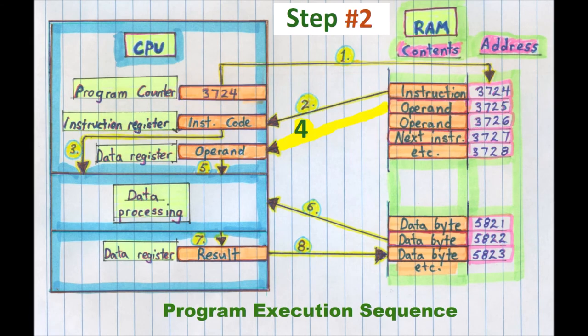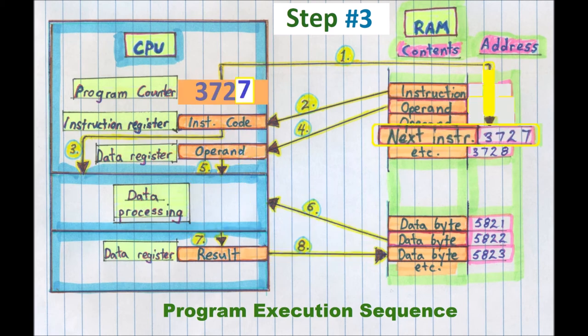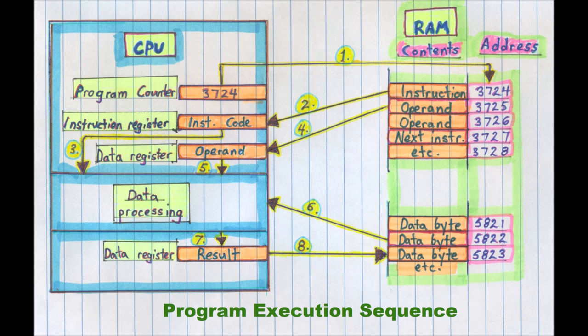The operating system programs like the word processor and the text data are stored in different parts of RAM during program execution. And the word processing application program calls up operating system routines as required to read in, process, and store the text data.